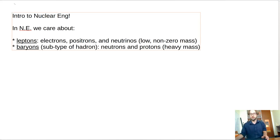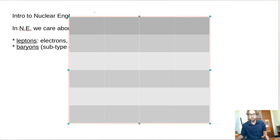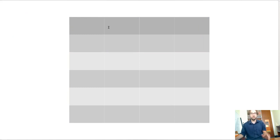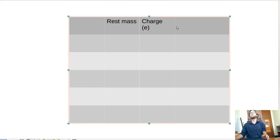So let's go ahead and make a little table for all of these that we might care about. So I think this will be good. Let's go ahead and have columns that are rest mass, charge, and their symbol that we'll use to denote them.